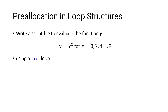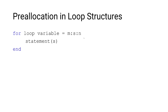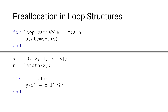Here's our example. We're going to write a script file to evaluate the function y, where y is equal to x squared, for x equal to 0, 2, 4, 6, and 8, using a for loop. Here's the traditional structure of a for loop and here is how we would implement our example without preallocation. We start with our independent variable — a row array for x. i is our loop variable, also serving as our array index, with an initial value of 1, a step value of 1, and a final value of n, where n equals the length of x, which determines the number of elements in x — in this case, five elements. For each loop pass, we will evaluate y.